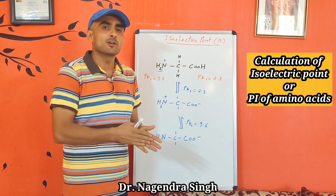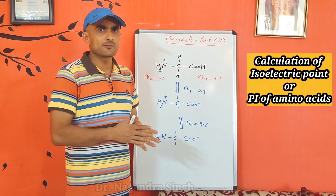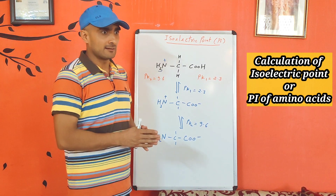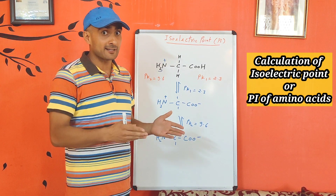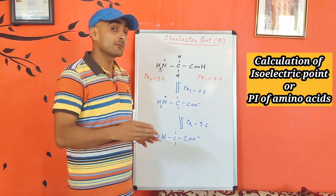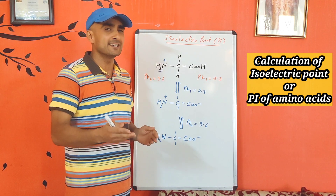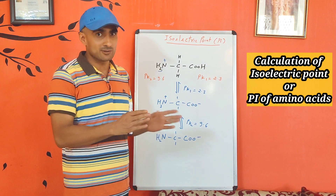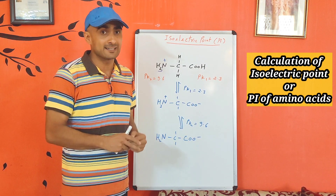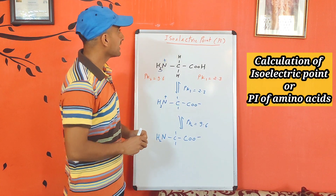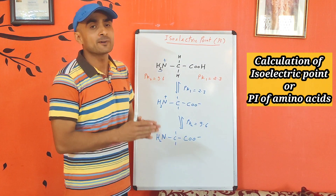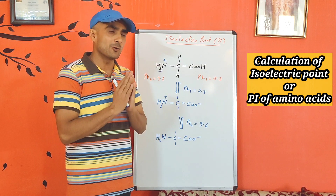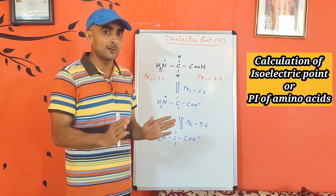Hello everyone. Today we will talk about the isoelectric point of proteins, peptides, and amino acids, and calculation of the theoretical isoelectric point value, also called PI. We will cover calculation of theoretical PI value for a protein, experimental PI value, and why these two values are different in the case of proteins. Isoelectric point, as per definition, is a pH value where the net charge on any ionizable compound is zero.